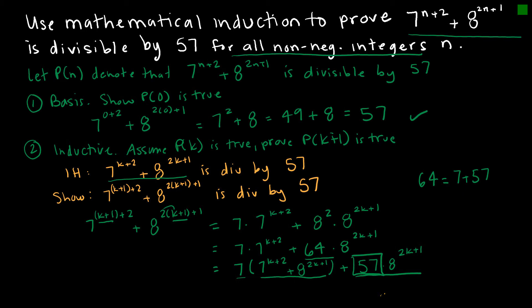I can say that my proof is done since 7^(k+3) + 8^(2k+3) is divisible by 57. Then P(n) is true for all non-negative integers n.